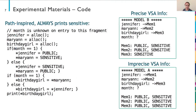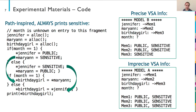Let's take a look at an example. This is a path-inspired problem that always prints sensitive information. It consists of two conditional sources where the value stored into an address is different between the conditionals, but the destination — the place where it is stored — is the same. If month is one, sensitive is stored into Marianne, and birthday girl becomes Marianne, and we print Marianne. Otherwise, sensitive is stored into Jennifer, Jennifer becomes the birthday girl, and we print sensitive again. So we see that we always print sensitive information.